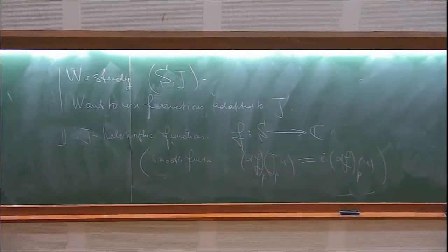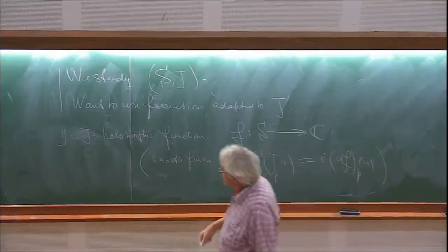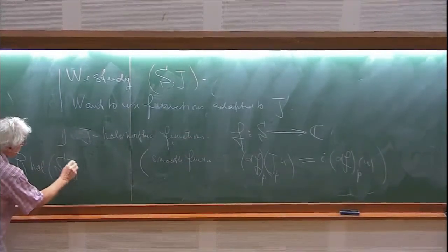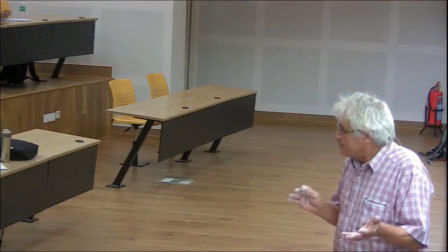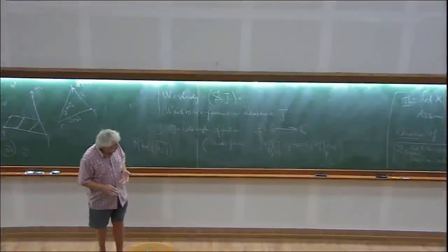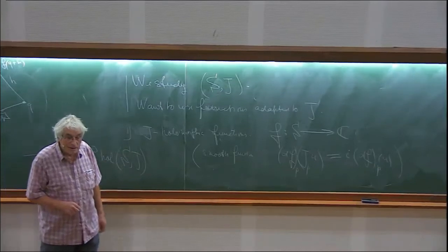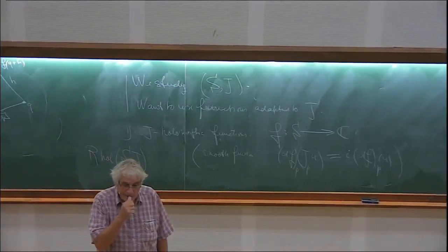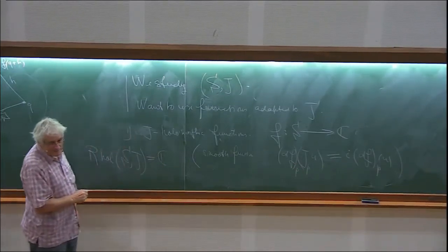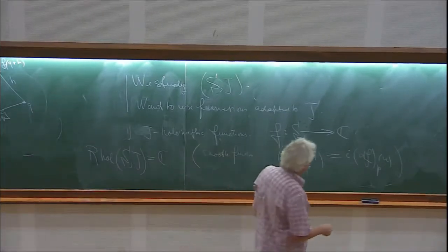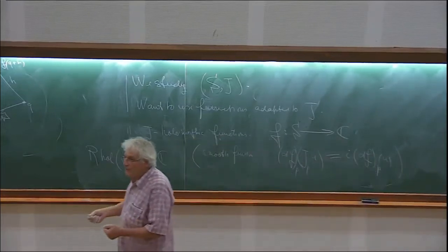Can somebody tell me why this does not work? We take the ring of holomorphic functions on the surface S. If the ring is not complicated enough, we have a problem. But what is this ring? On a compact Riemann surface, the only holomorphic functions are constants — the ring is just the complex numbers, which does not depend on the surface at all. That is one of the main difficulties to study Riemann surfaces — you do not have enough adapted functions.